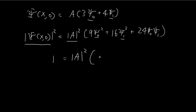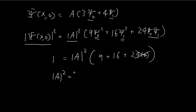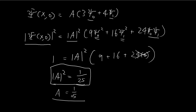Integrating 9 xi 0 squared, you just get 1 because this is normalized, so you get 9. Integrating xi 1 squared, this is also equal to 1, so you just get 16. And then the cross term gives 0 because these functions are orthogonal to each other, so 24 times 0 is just 0, so we ignore that. Now we know that the modulus of A squared is equal to 1 divided by 25, and we can choose A to be equal to 1 fifth.